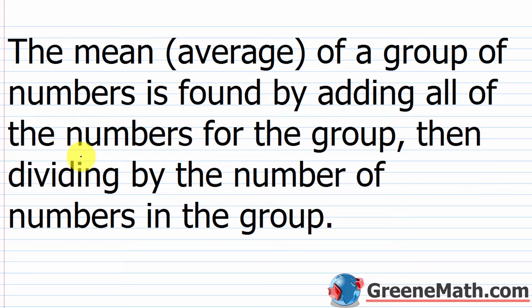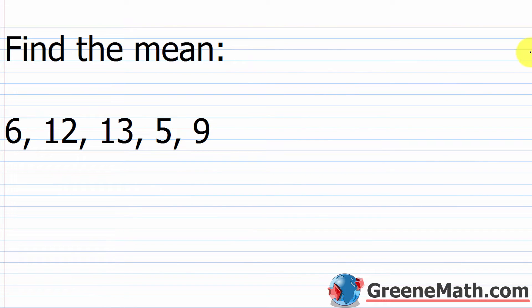Let's start out with one that you're probably already familiar with, even if you've never heard it called the mean. The mean, otherwise known as the average — and that's probably what you've heard it as — of a group of numbers is found by adding all of the numbers in the group, then dividing by the number of numbers in the group. So it's very simple to find an average.